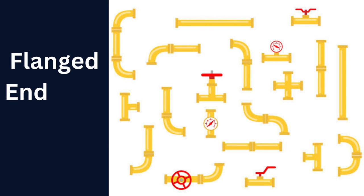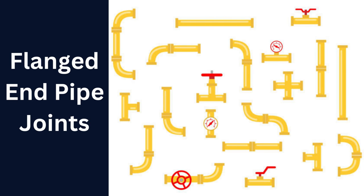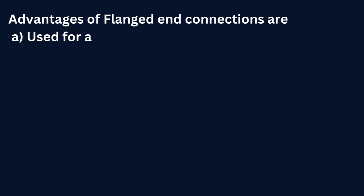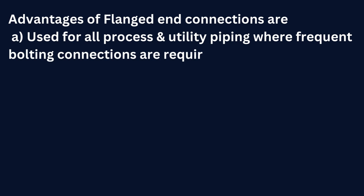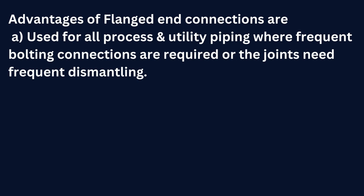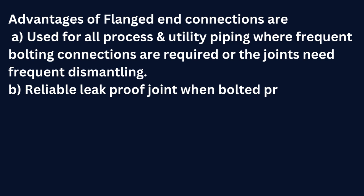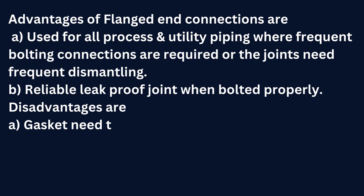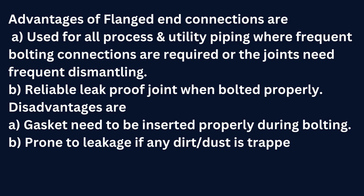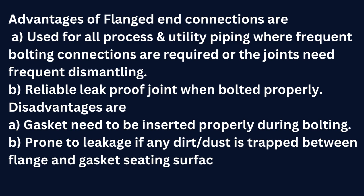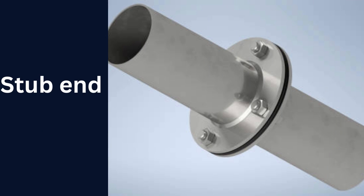Flanged end pipe joints: flanged end connections are used at equipment, valves, and special items where maintenance is a regular feature. Breakout flanges are provided at definite intervals on pipelines. Advantages: A. used for all process utility piping where frequent bolting connections are required or the joints need frequent dismantling; B. reliable leak-proof joint when bolted properly. Disadvantages: A. gasket needs to be inserted properly during bolting; B. prone to leakage if any dirt or dust is trapped between the flange and gasket seating surface.